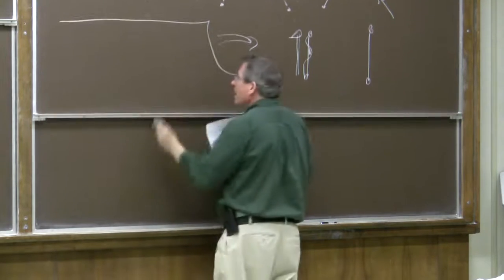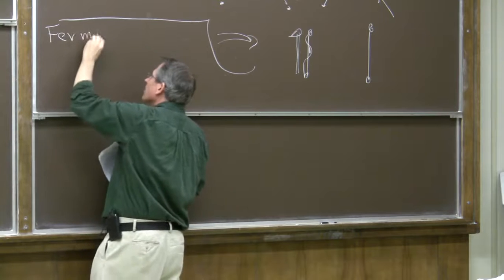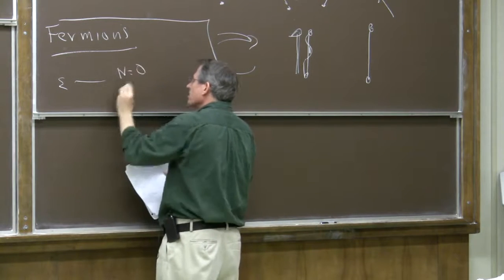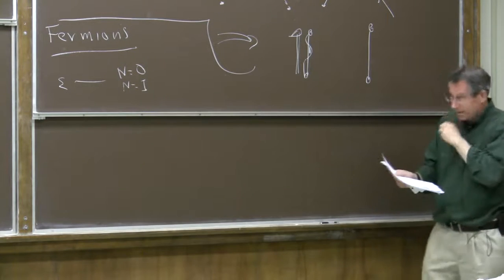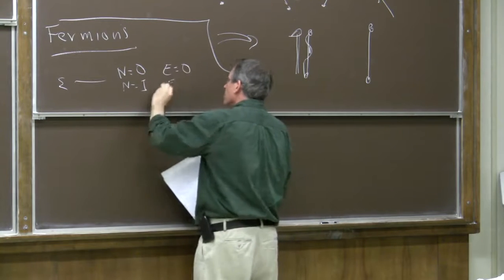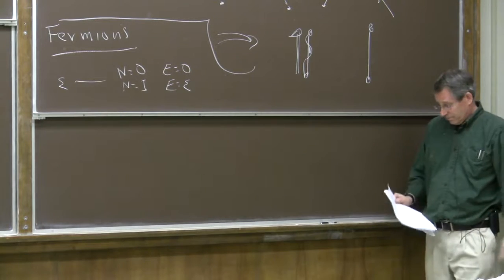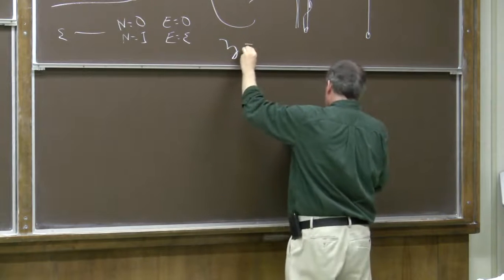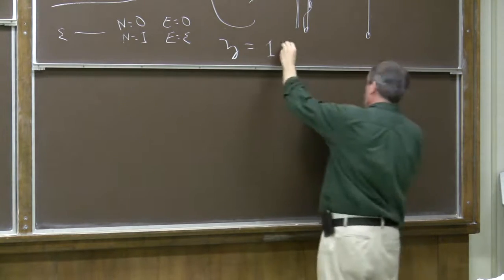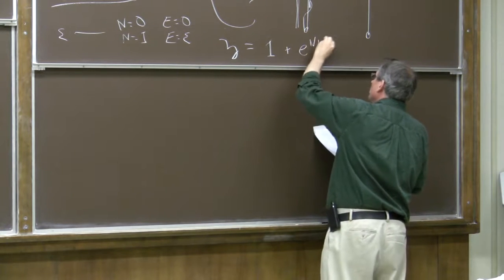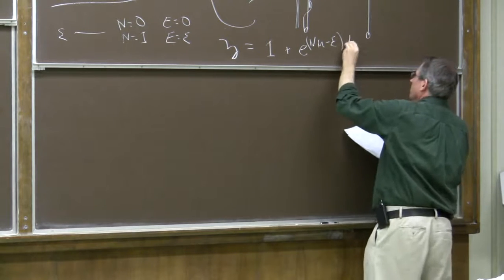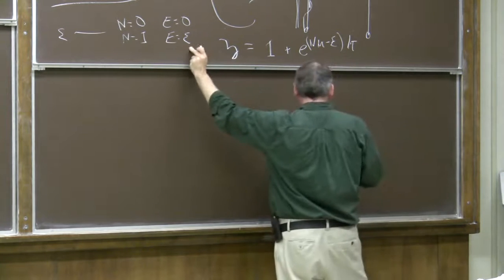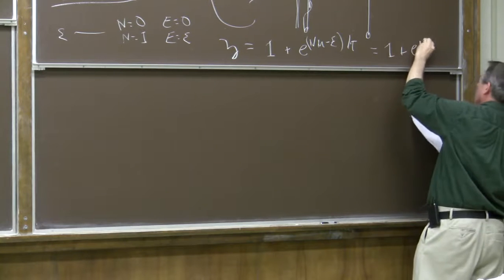We'd like to see how the average number of particles in an orbital depends on temperature and chemical potential. Consider fermions first. For a single orbital with energy ε, either N = 0 (empty) or N = 1 (occupied). The Gibbs sum for that single orbital is 1 (when empty) plus e^((μ − ε)/τ) (when occupied), giving: script Z = 1 + e^((μ − ε)/τ).